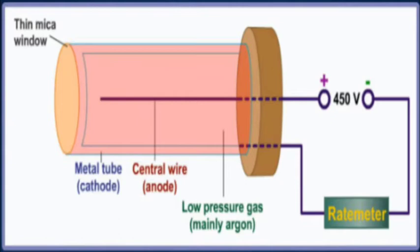The thin wire running inside the cylindrical part is the anode, connected to a 450-volt source. The connection going through the rate meter is the cathode — the negative terminal. There is a thin mica window on the left where radiation enters. Inside the tube, argon gas at low pressure is ionized by the radiation as it enters through the mica window. This ionization sets up an electric field between the positive and negative terminals, completing a circuit, and the rate meter counts the radiation being received.